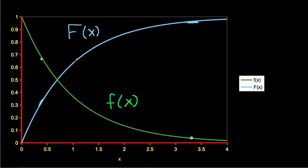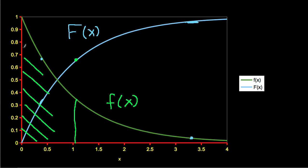I can also relate the cumulative distribution function to the density function in the sense that the cumulative distribution function is the integral of the density function. So for example, the cumulative distribution function at this point is the integral under the density function from minus infinity, and since the density function is defined to be zero for values of x less than zero, it's basically this area right here.